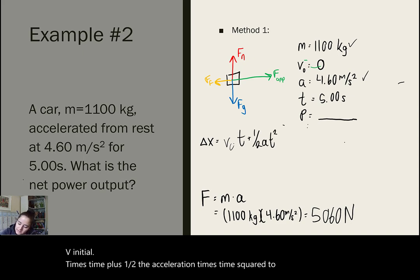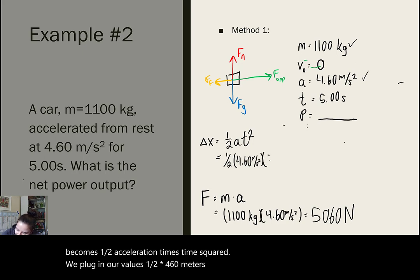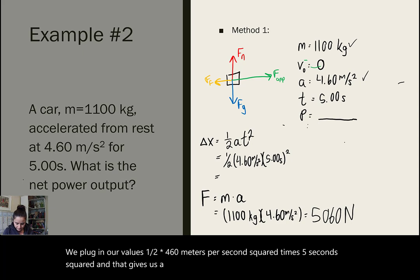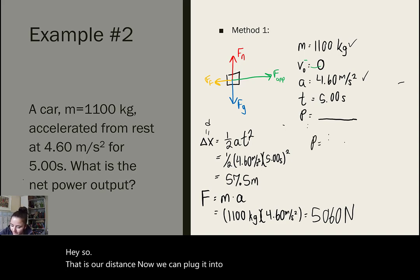We plug in our values. 1 half times 4.60 meters per second squared times 5 seconds squared. And that gives us a distance of 57.5 meters. So, that is our distance.